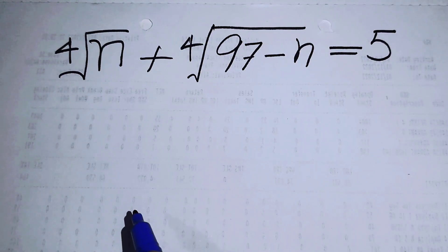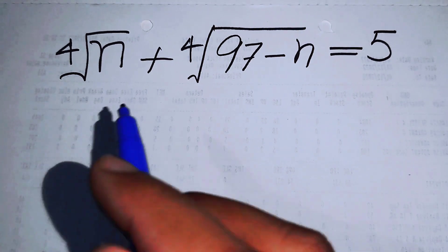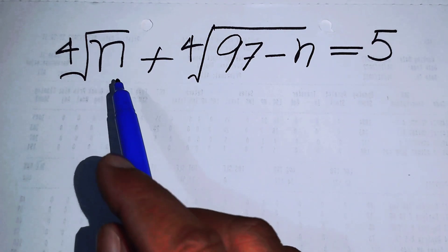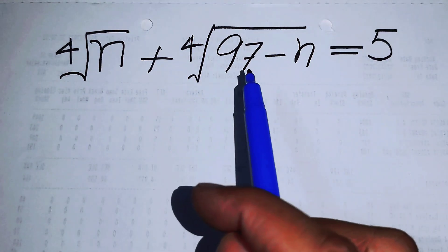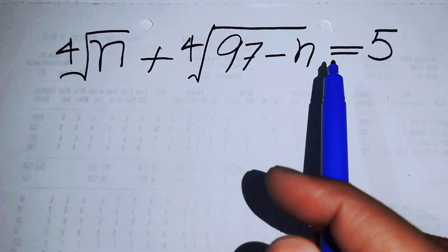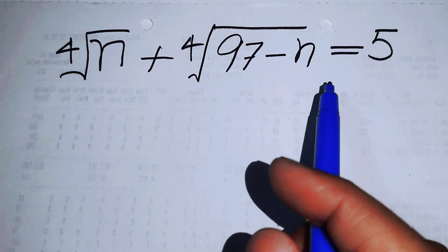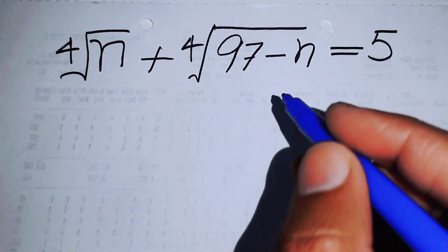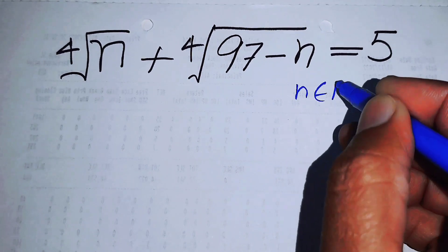Hello everyone, welcome back to the Map of Mathematics. In this video we are going to solve this nice algebra problem: the fourth root of n plus the fourth root of 97 minus n equals 5. We will solve this problem for the real values of n.